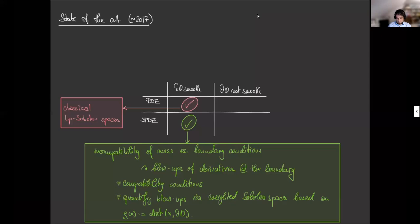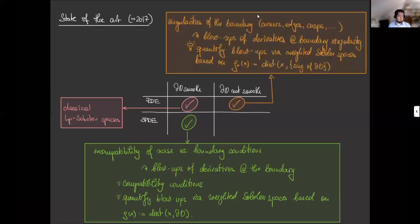And this is most likely because of an effect which is already known from the theory of deterministic partial differential equations on non-smooth domains, namely that singularity of the boundaries, like corners, edges, or cusps, also lead to blow-ups of the derivatives at the boundary, but not at the full boundary, but at the boundary singularities. This may even happen if your forcing terms don't even have a support at the singularities of the boundary.